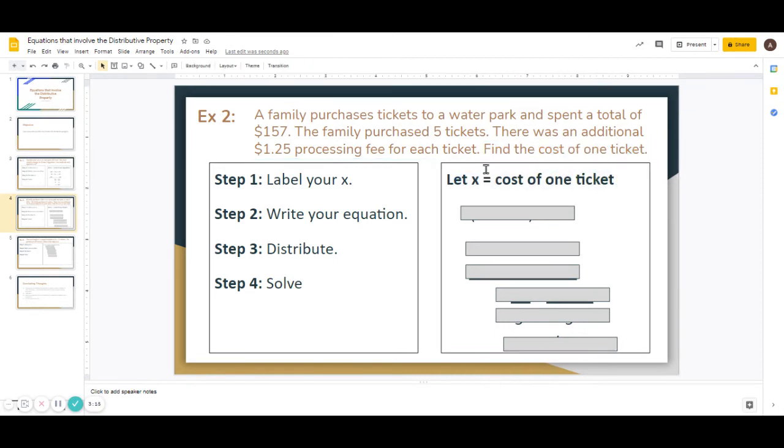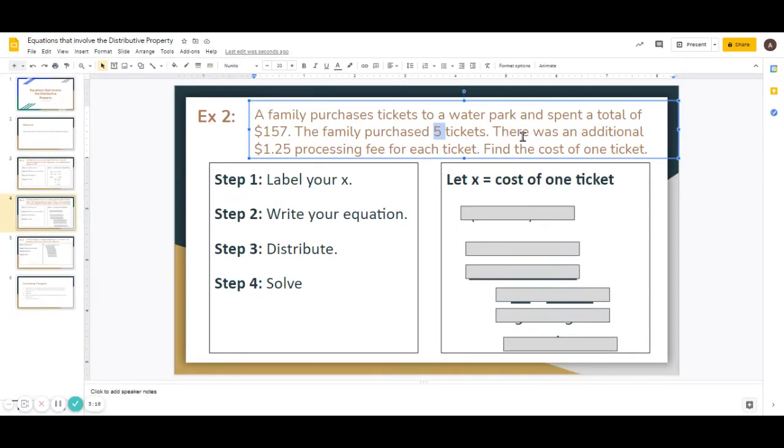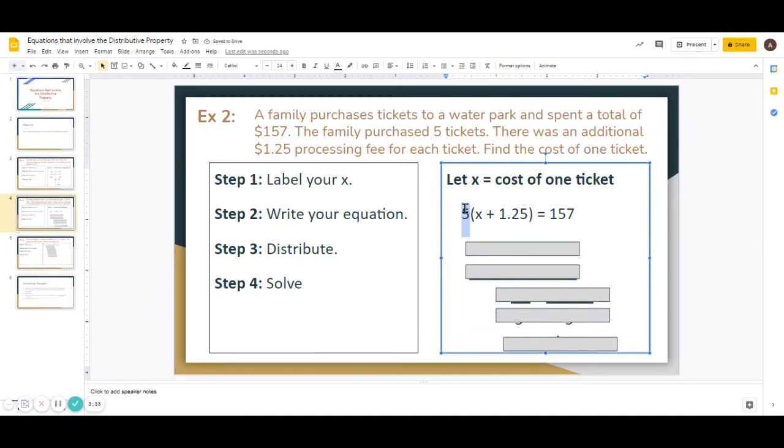Now we know that the cost of the ticket is going to eventually be multiplied by 5 because it's a family of 5. And we know that the ticket is going to have an additional $1.25 added to it. So 5 represents the people. And then x plus $1.25, that is what the cost would be for the whole transaction for one person. x is the cost of one ticket. $1.25 is the cost of the processing fee.